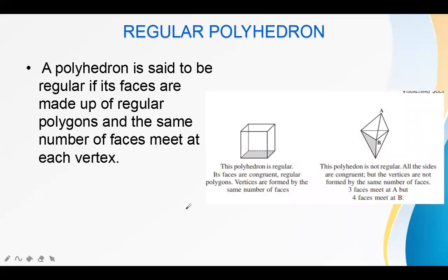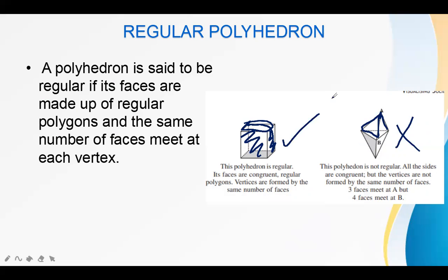A polyhedron is said to be regular if its faces are made of regular polygons and the same number of faces meet at each vertex. For example, a cube is a regular polyhedron because all its faces are squares. A shape where all faces are triangular and congruent is not necessarily regular — if at vertex A three faces meet but at vertex B four faces meet, it is not a regular polyhedron.